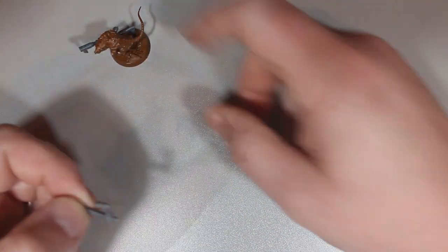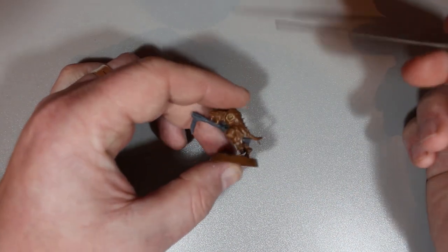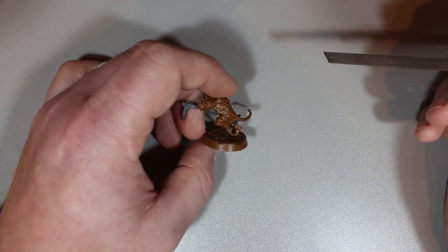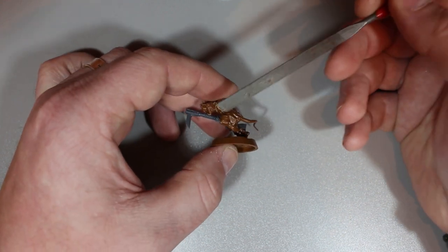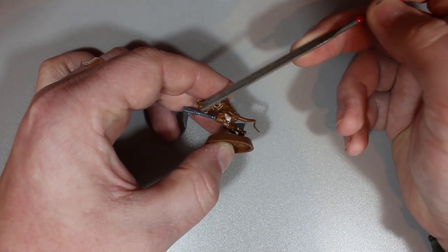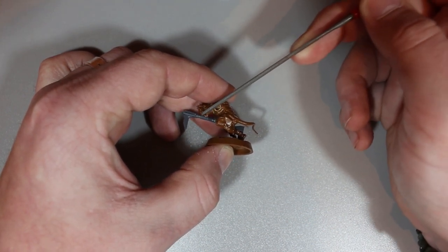One of the things I had to do was file down the edges on this, because on the shoulders there's a lot of extra parts. You have to file it down a little bit, but be extra careful because this model can be very fragile, especially on the feet area.